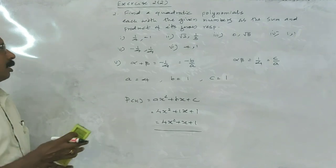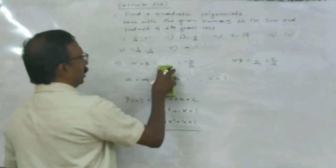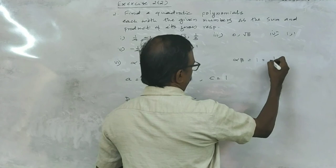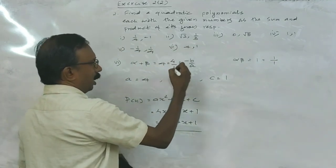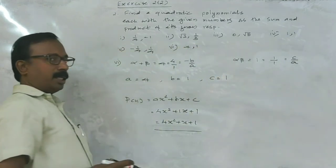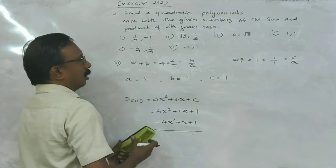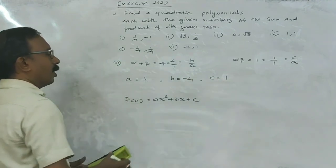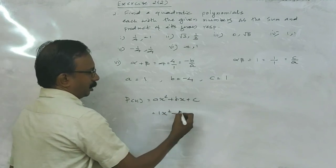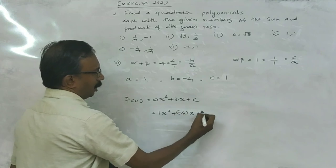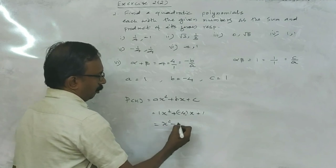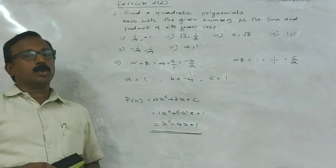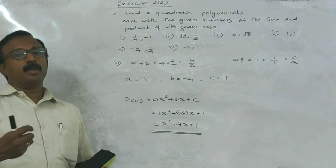Now we have only one more question. Sixth question: alpha plus beta is 4 and alpha beta is 1. So we can write 1 by 1 and 4 by 1. This is C by A and the same denominators. So A equals 1, minus B equals 4 so B equals minus 4, C equals 1. So it becomes X squared minus 4X plus 1, isn't it? This way, if we know the sum and product of zeros we can make the polynomial.